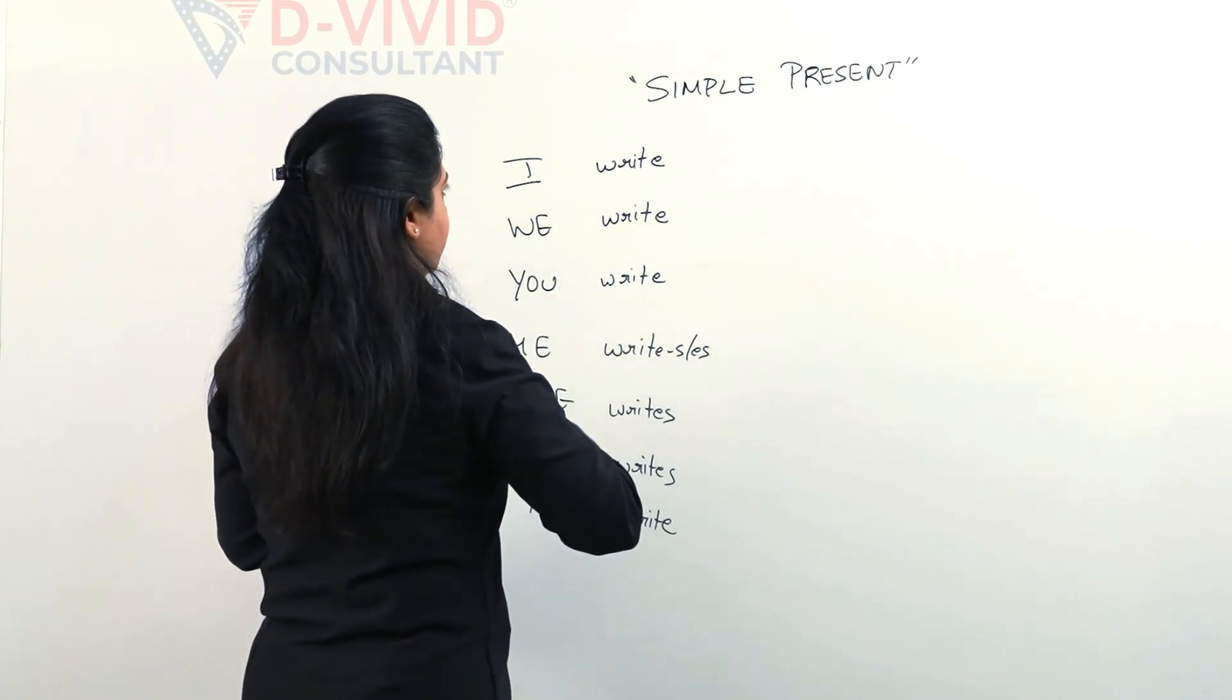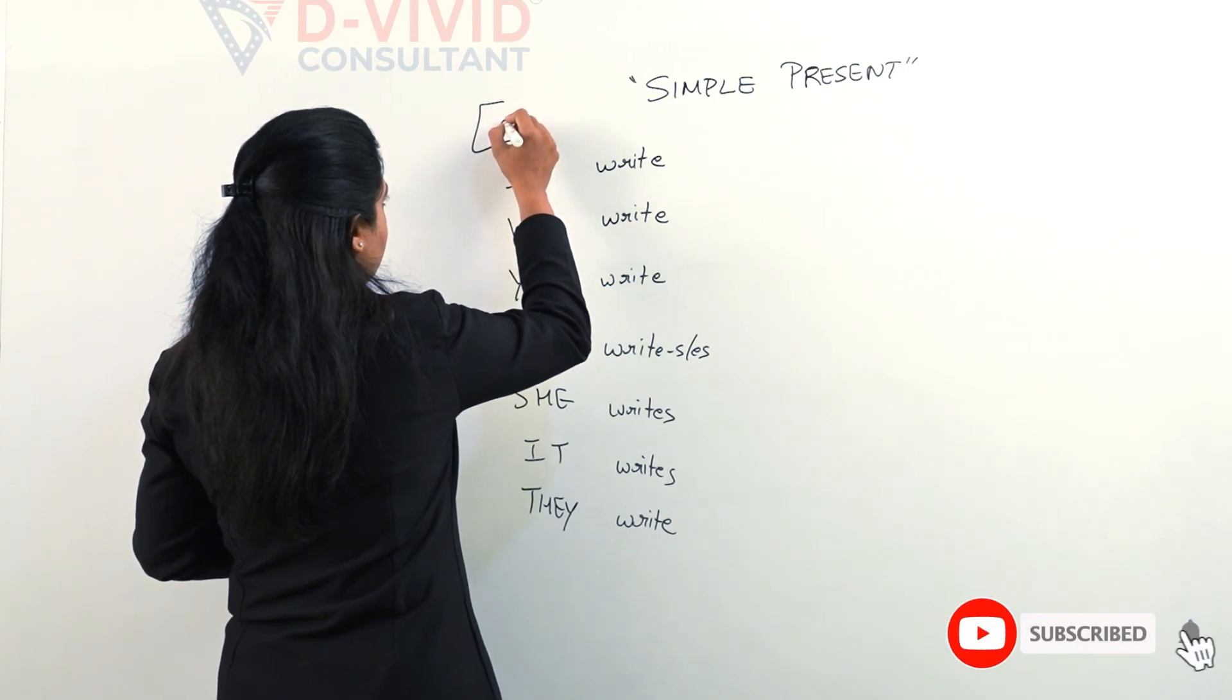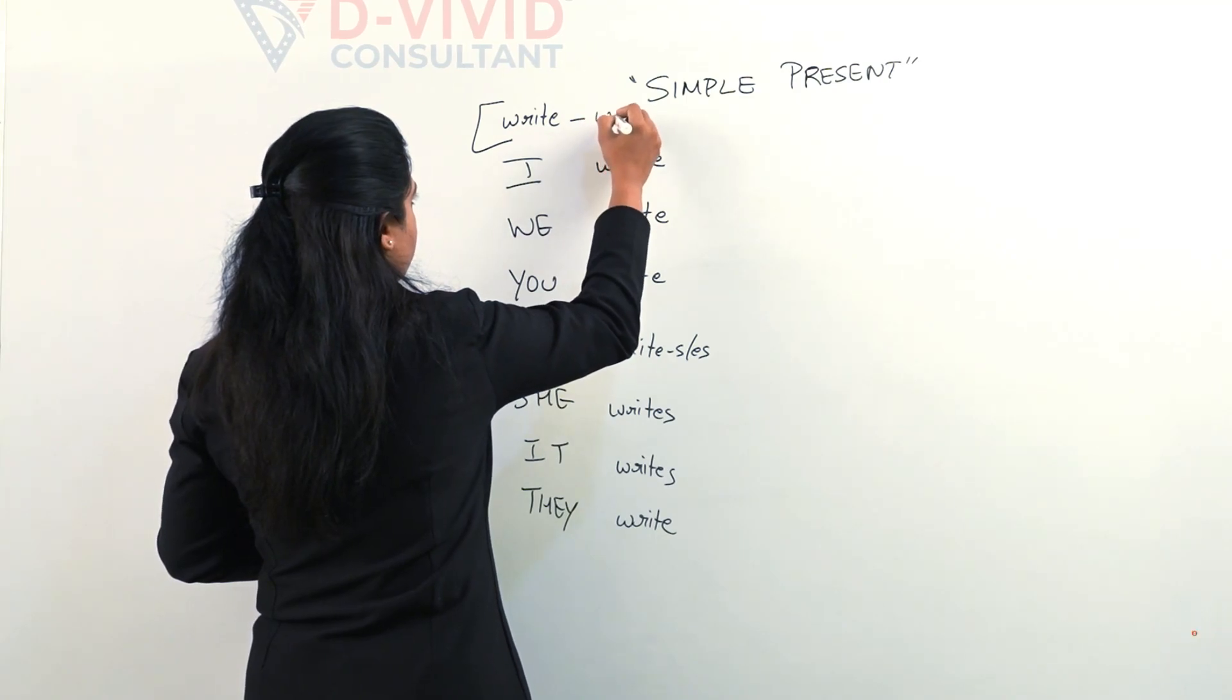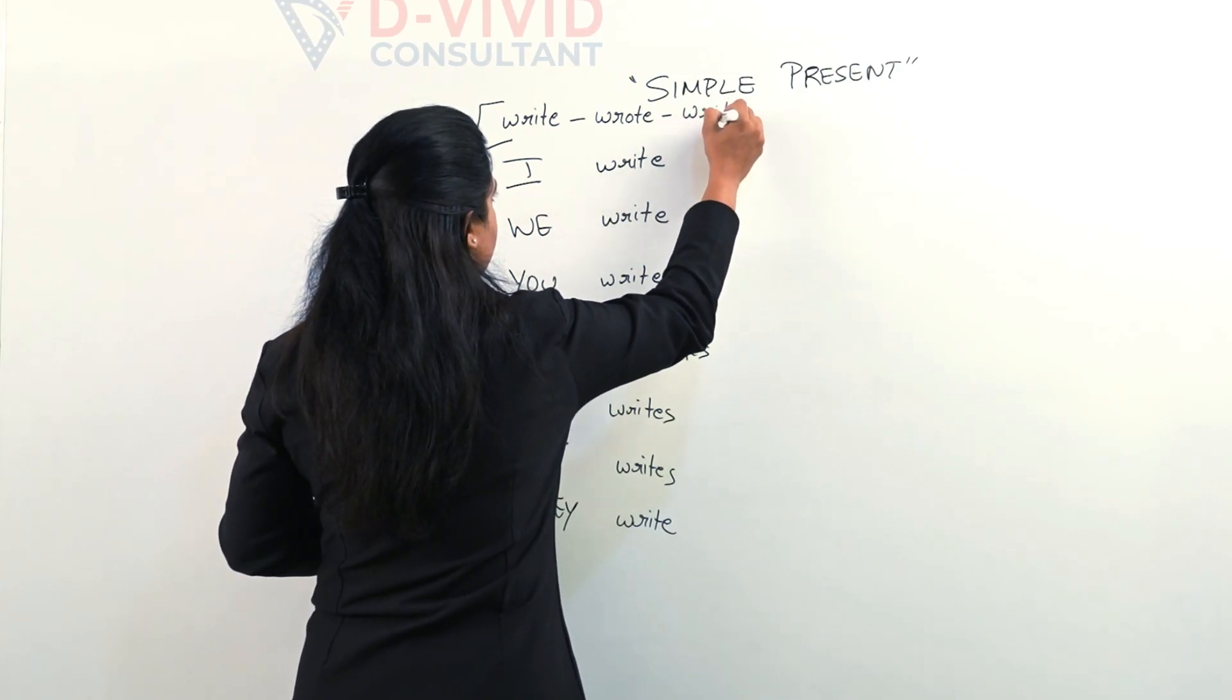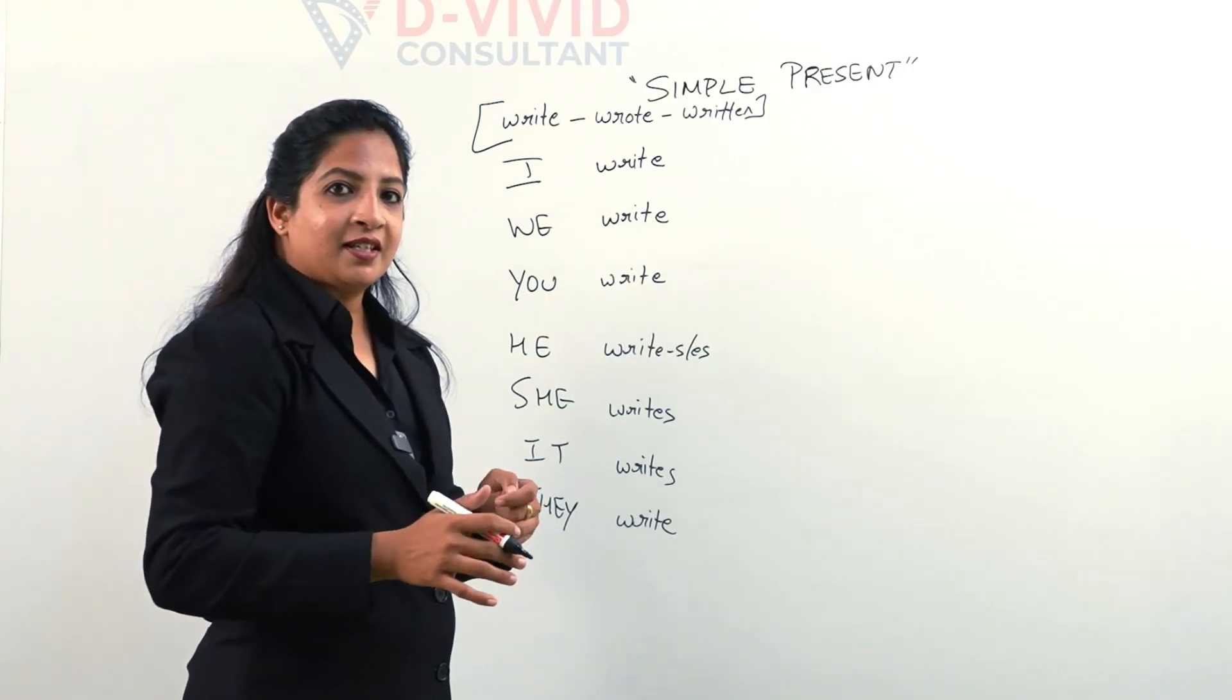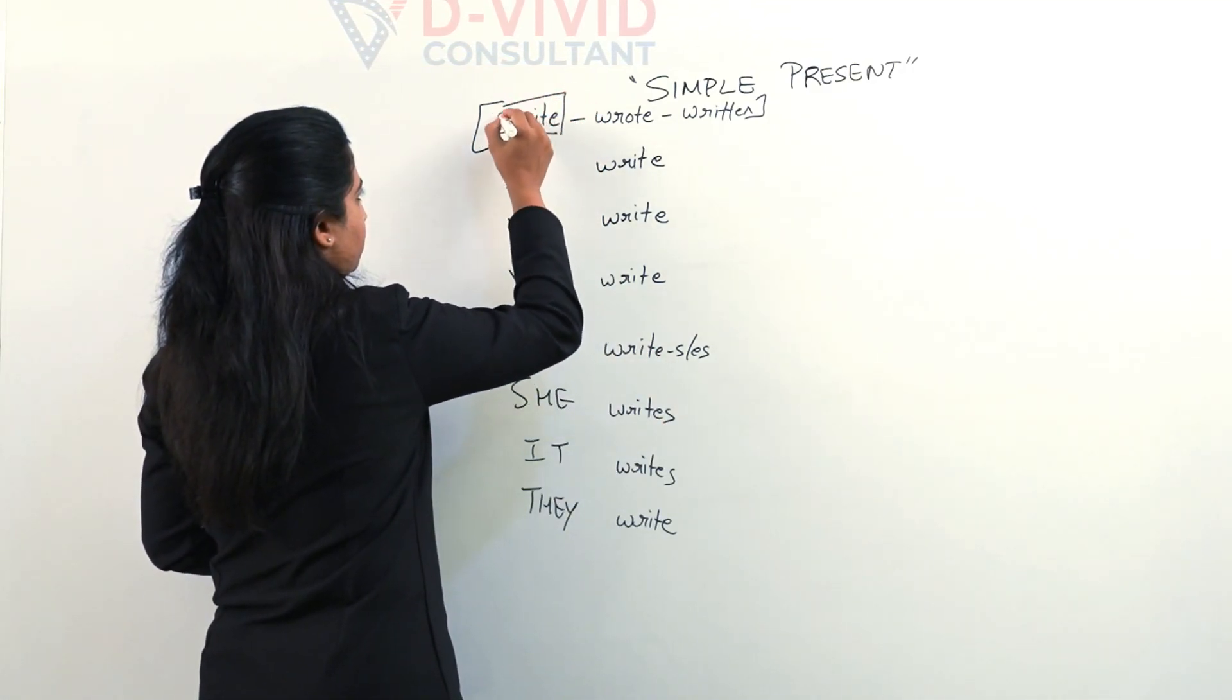There are three forms of verbs. First form, if I say, write. Past tense of which is wrote. And the third form is written. In simple present tense, we use the first form of the verb.